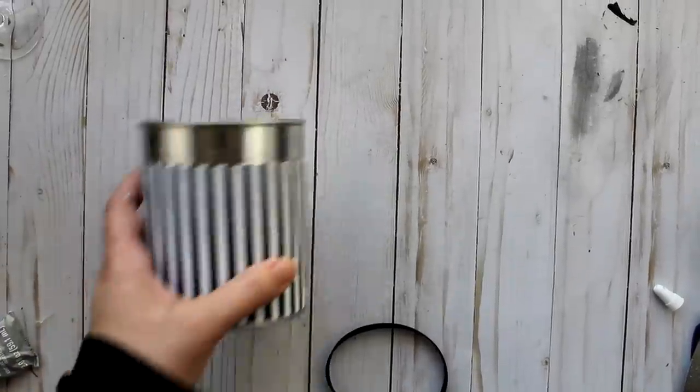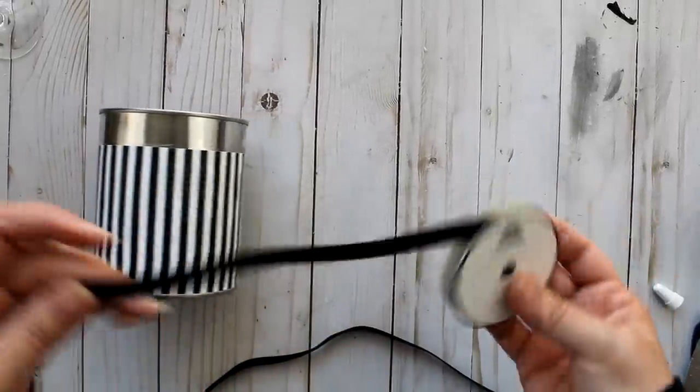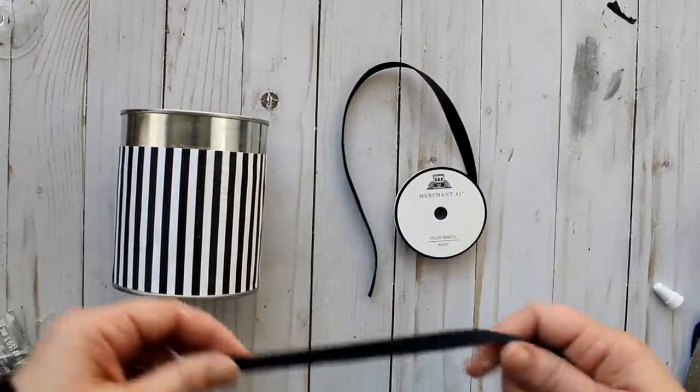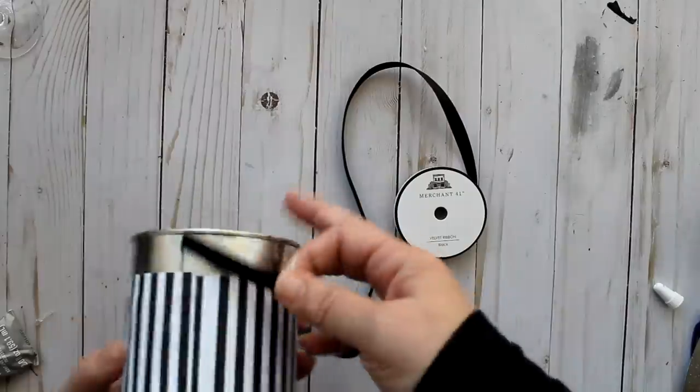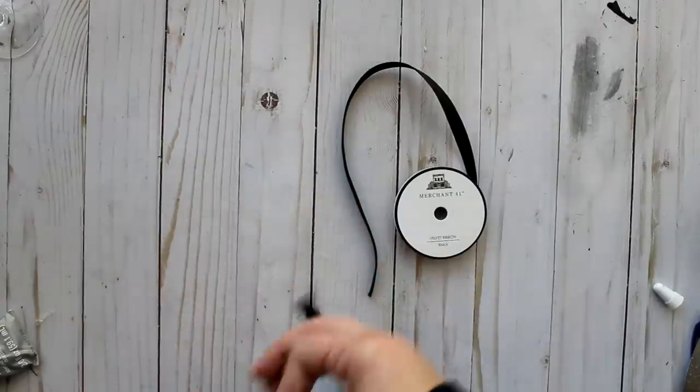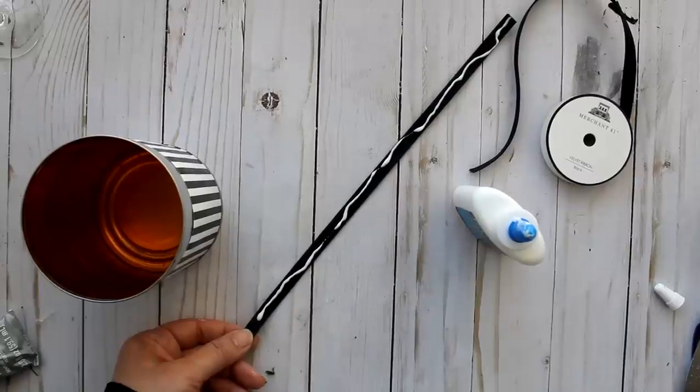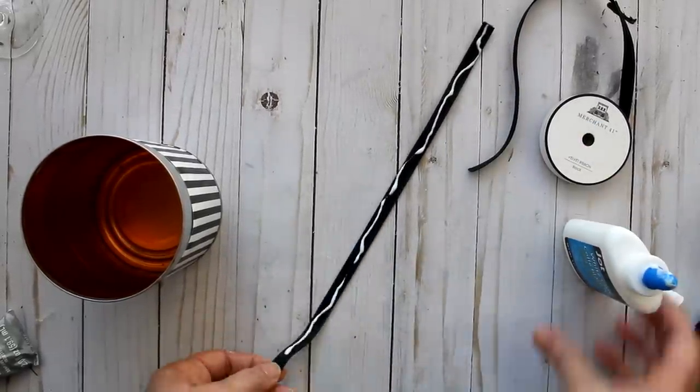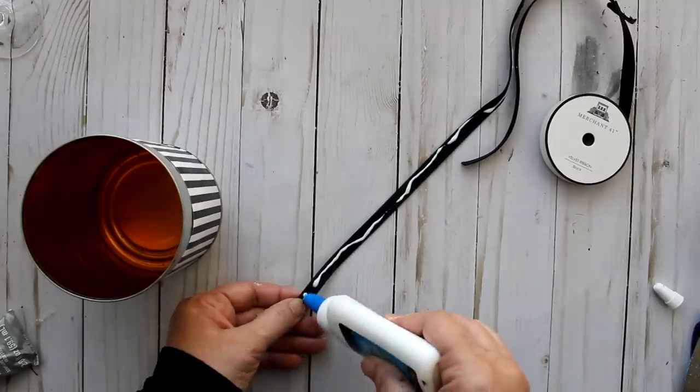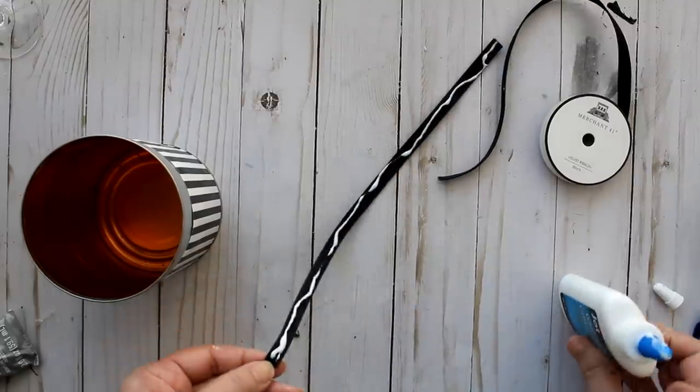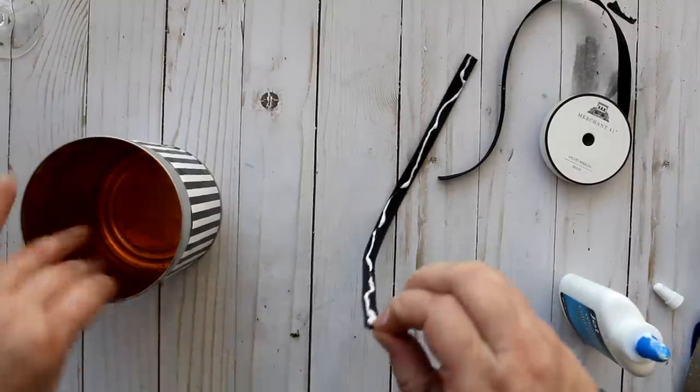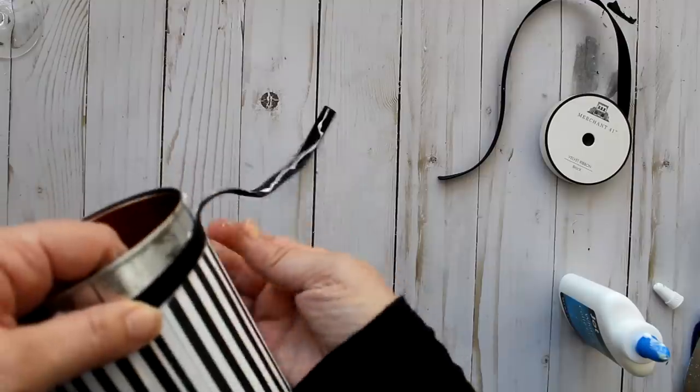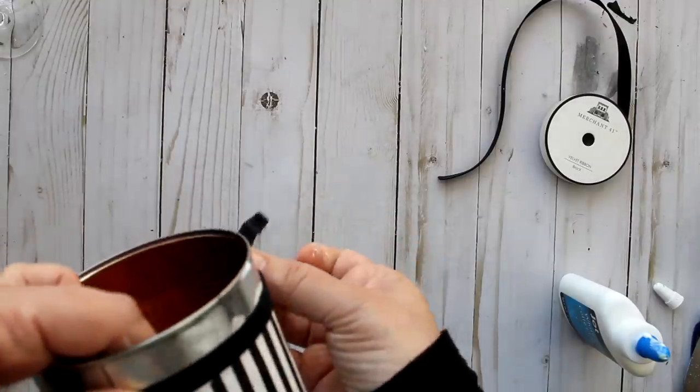Once the Mod Podge had dried it was time to add the velvet ribbon accent. So I took this velvet ribbon that I purchased from Hobby Lobby and I just took a piece and measured it around the can to get a piece that fit exactly around. Then I took some of the white glue and just added it to the back of the ribbon making sure that I got it all the way to the ends of the ribbon. Then I just start it from where the little gap piece was and just wrap the ribbon all the way around the can.